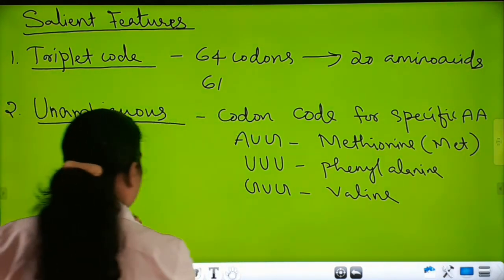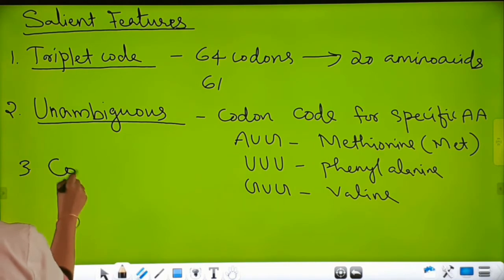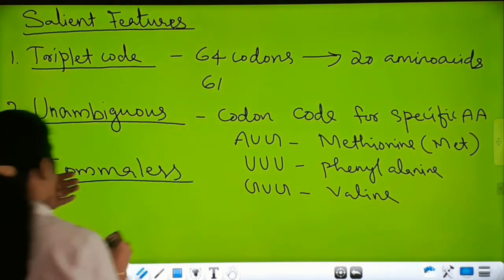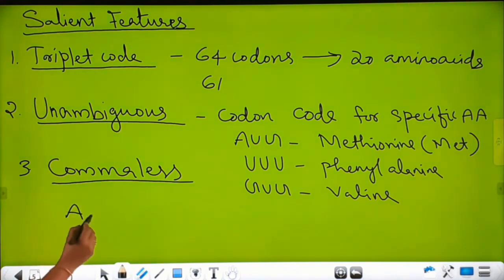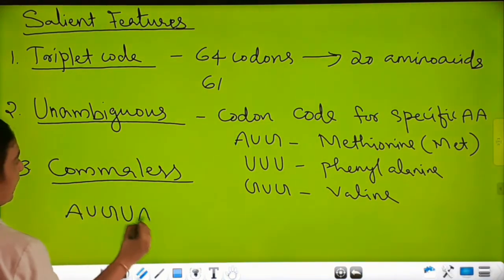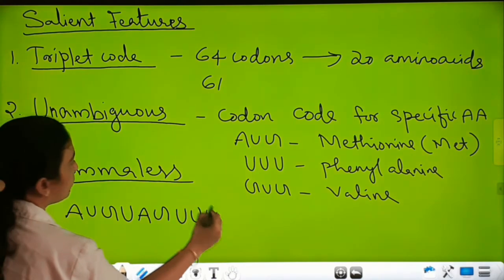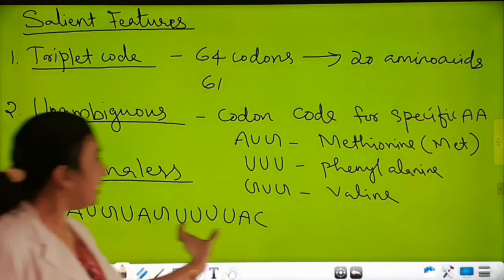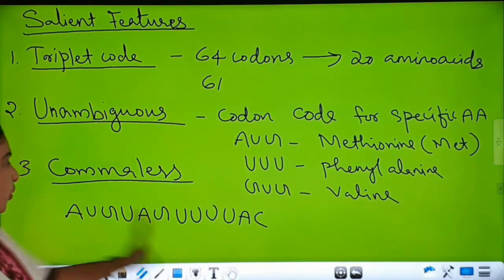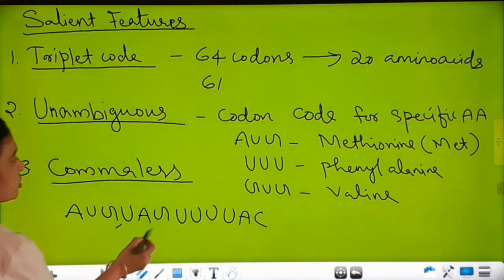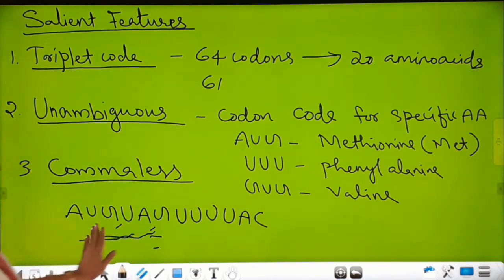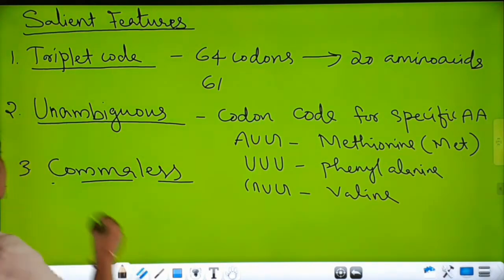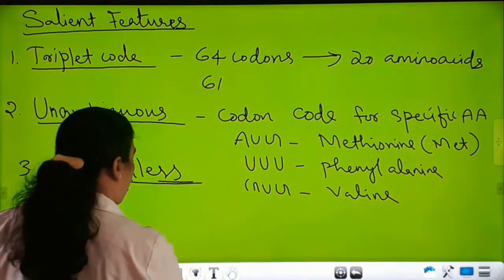The third feature is commaless. The sequences in the genetic code — for example, AUG, UAG, UUU, UAC — can be read continuously. There is no comma or punctuation between adjacent codons. That is called the commaless nature.